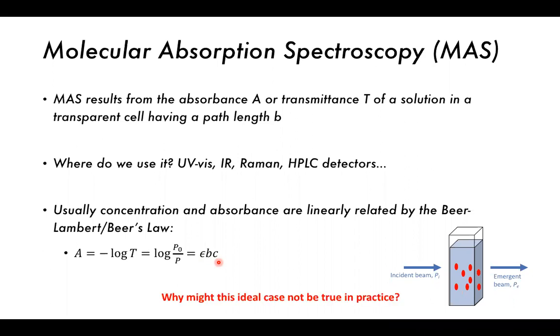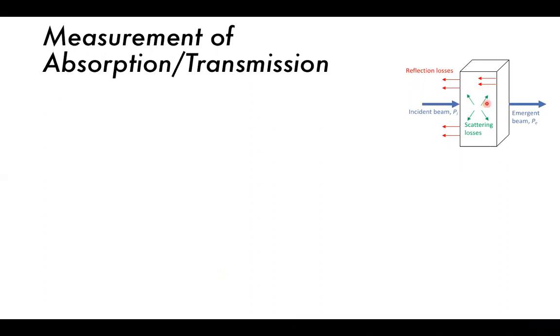Now, why might this not be true in practice? There are some attributes of a solution which may cause it to have a different absorbance than normal. So here are some of the potential losses of light. We have a cuvette filled with our solution. One major loss is reflection, where the light is reflected off the surface of the cuvette, which is typically made of glass — a semi-reflective surface — resulting in loss of light intensity. Another potential loss is through scattering losses.